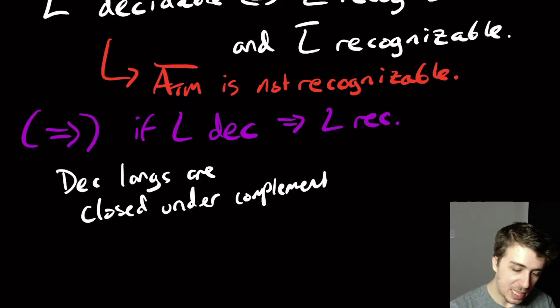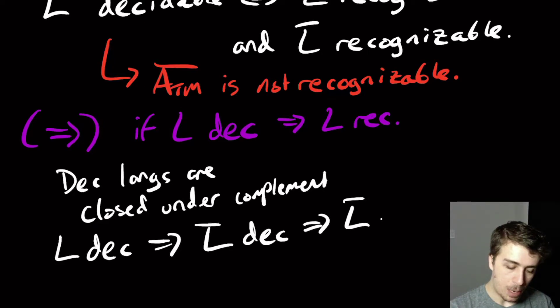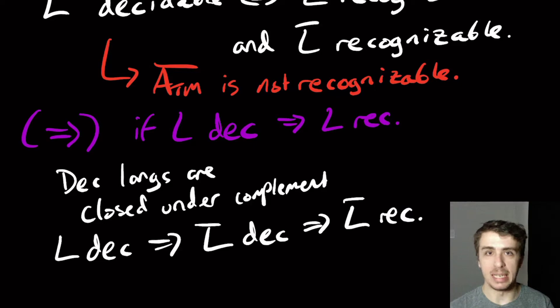Which means that L decidable implies L bar decidable. And by the thing we just argued, that implies that L bar is recognizable, too. And so that's pretty easy.